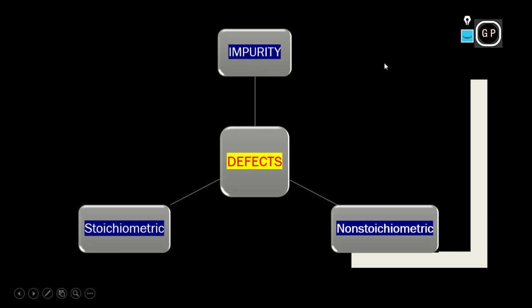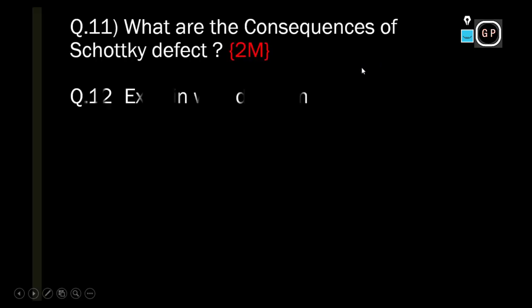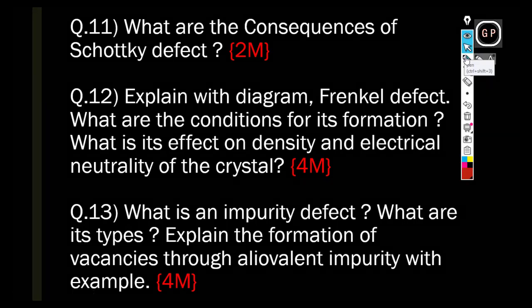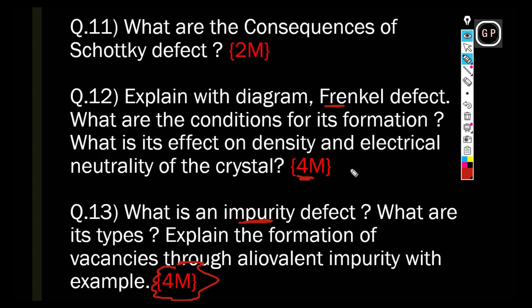The first question is: what are the consequences of the Schottky defect? The second is: explain with the help of a diagram the Frenkel defect — what are the conditions for its formation, its effect on density, and electrical neutrality? This question is asked for four marks. Also: what is an impurity defect, what are its types, and explain the formation of vacancy through an aliovalent impurity with an example? These are the two most important questions.